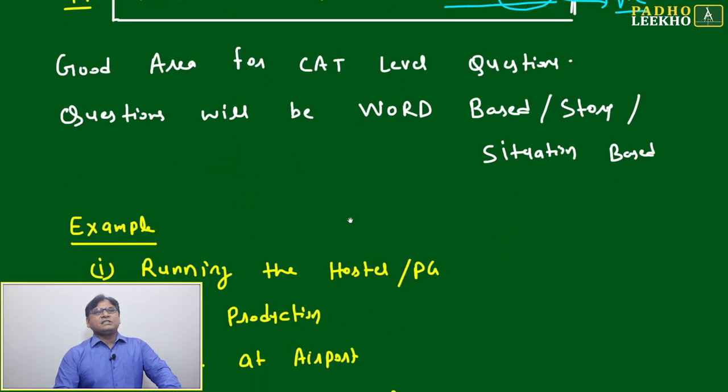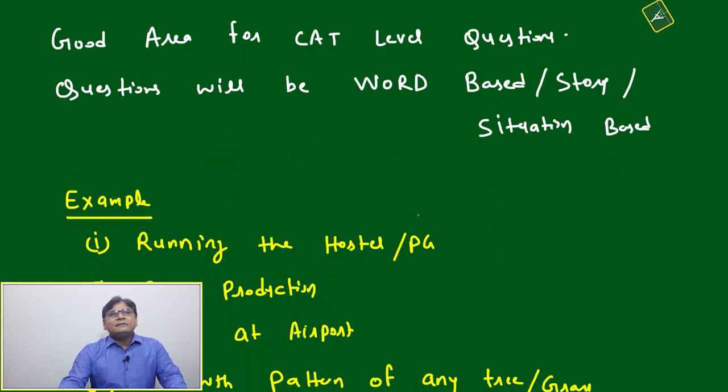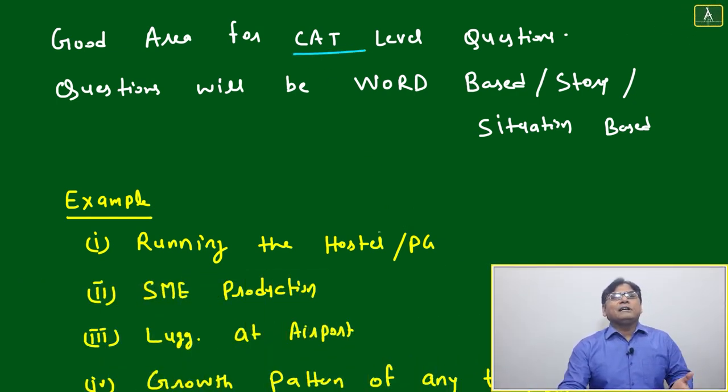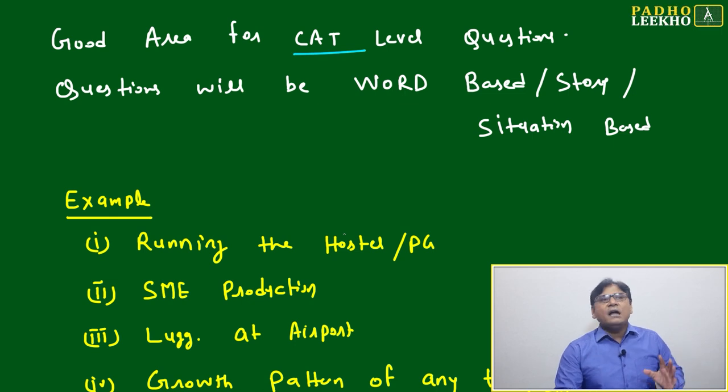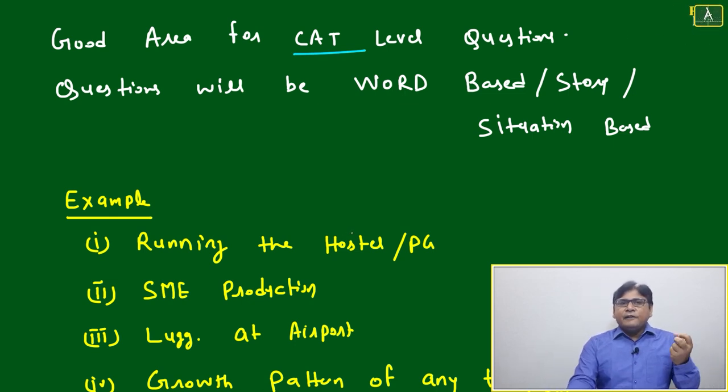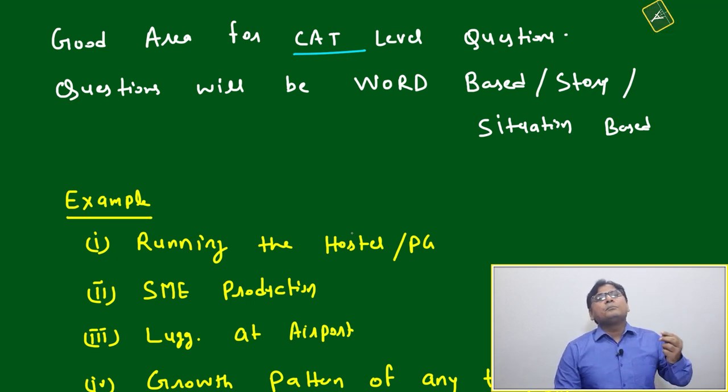Based on this variety of questions are coming in CAT and other exams also, very frequently they are asking questions based on direct linear variation. If intercept is not there, then we can say it is direct proportional.